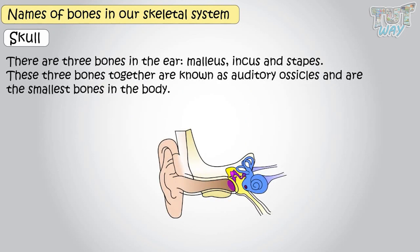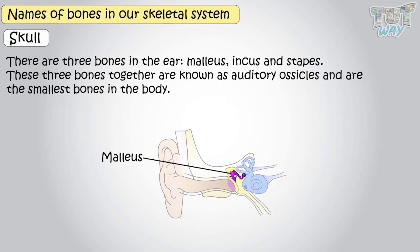Three bones present inside the ear are the malleus, incus, and stapes, and they are known as auditory ossicles. These are also the smallest bones in the body.